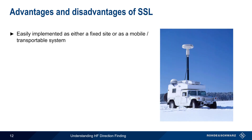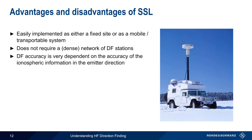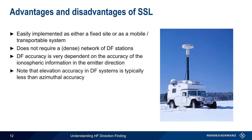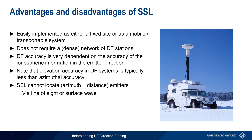Single site HF-DF systems are easily implemented as either a fixed site or as a mobile/transportable system. And since a location can be obtained by only a single station, a dense network of DF stations is not required. Note however that accuracy very much depends on how accurately the state of the ionosphere can be modeled and/or measured in the direction of the emitter. It's also worth mentioning that for most DF systems, elevation accuracy is typically less than azimuthal accuracy. Two important limitations of single site location are that it does not work on line-of-sight or surface wave signals, and it also does not work if signals cannot be received.